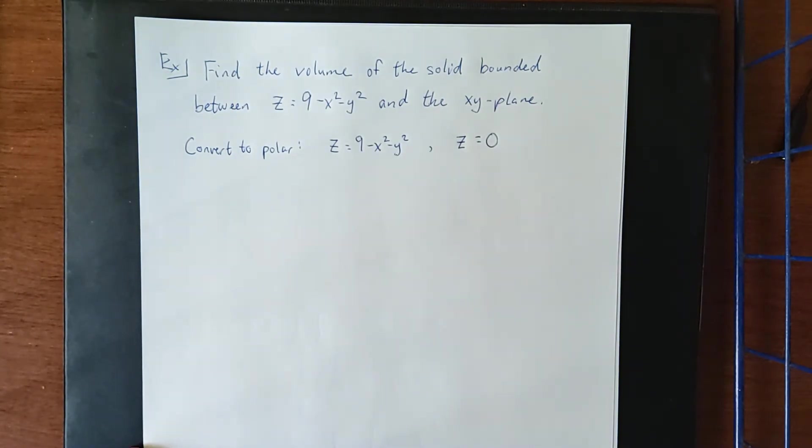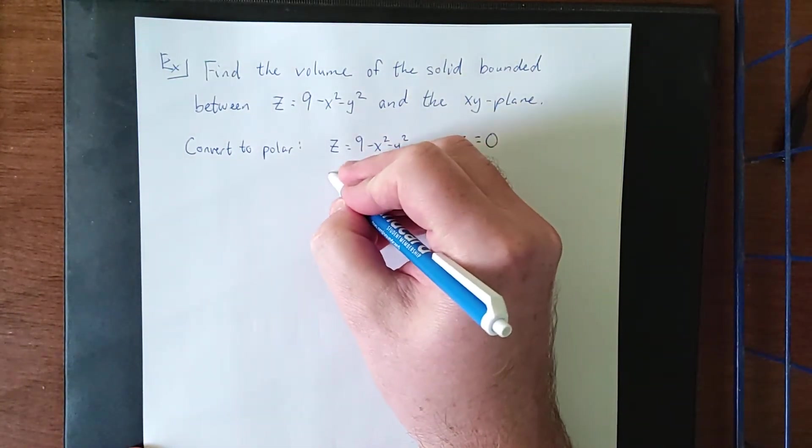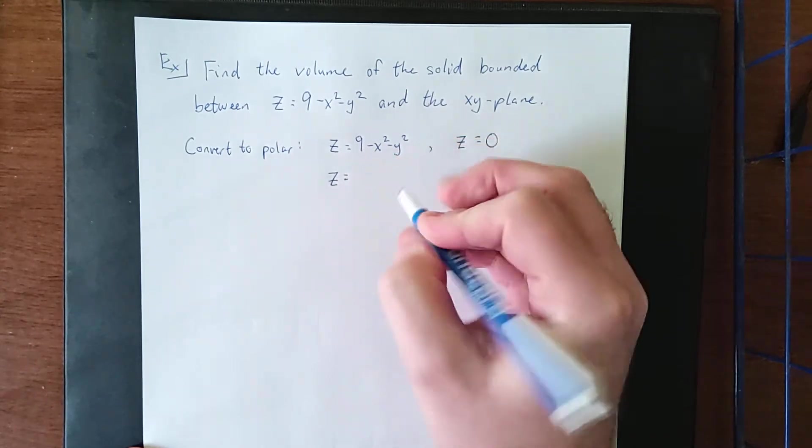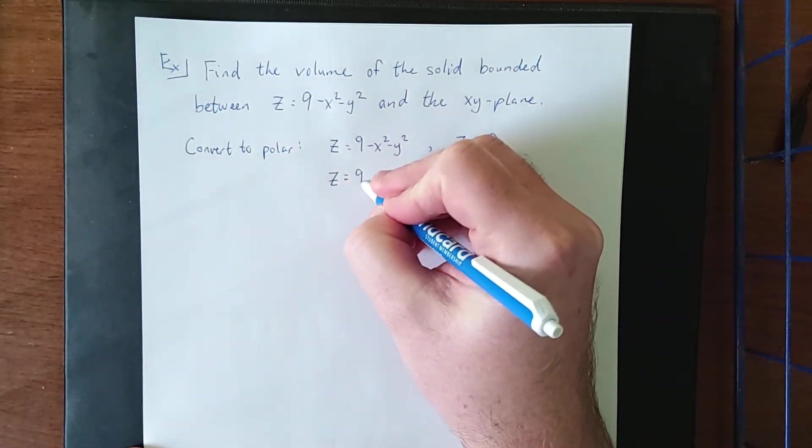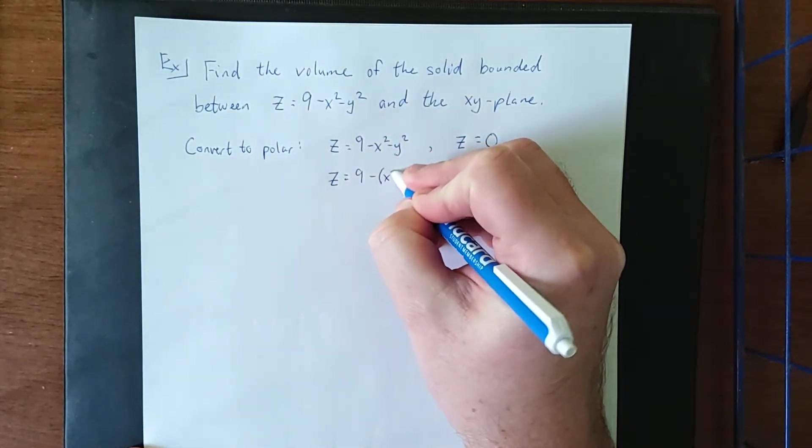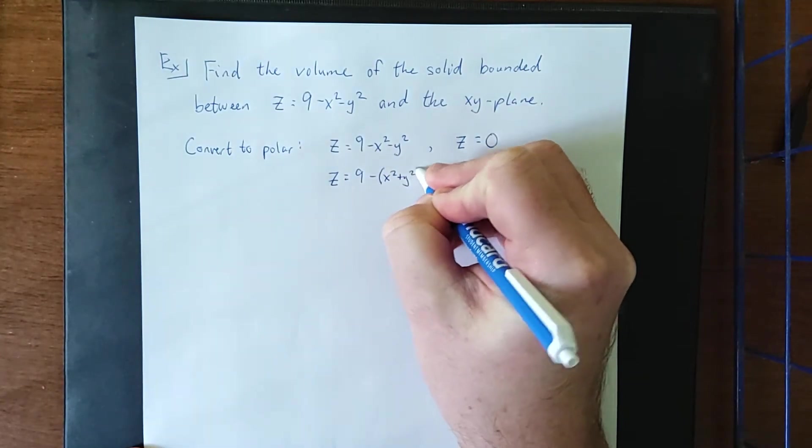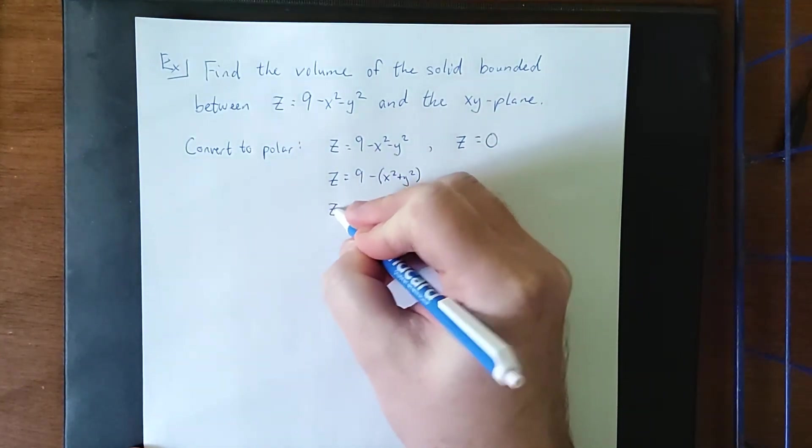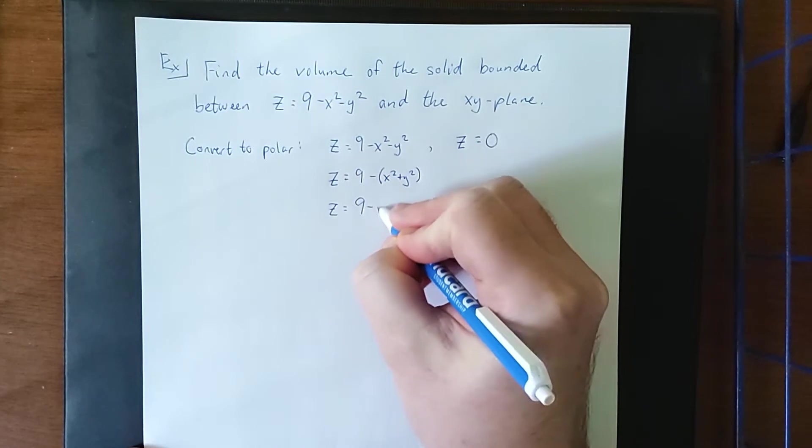Now what we're really saying here is 9 minus the quantity x squared plus y squared, and making a conversion on that is going to give me 9 minus r squared.